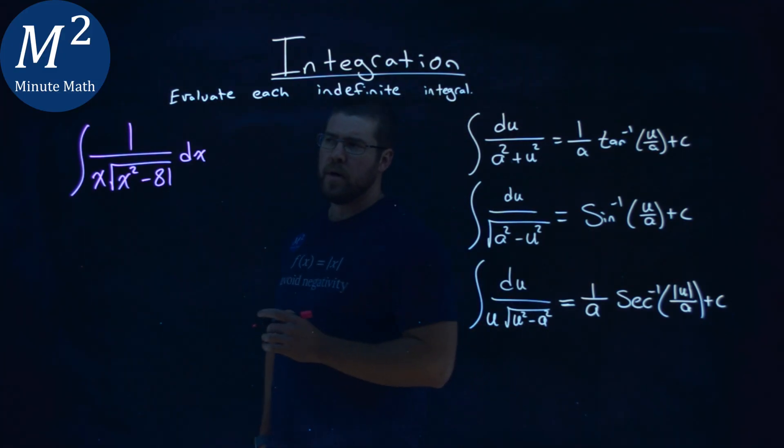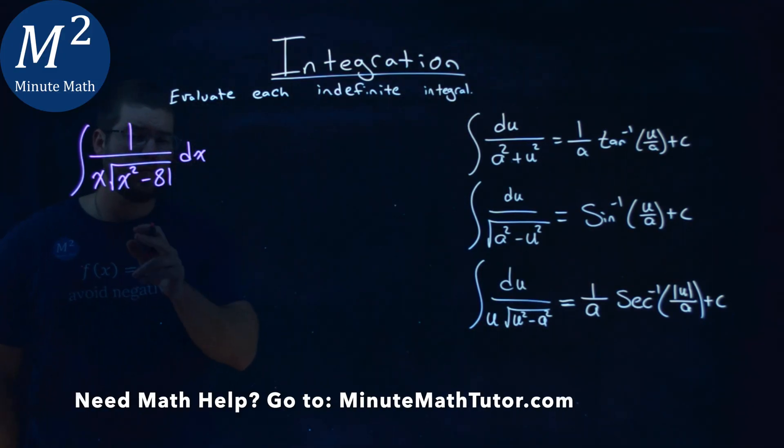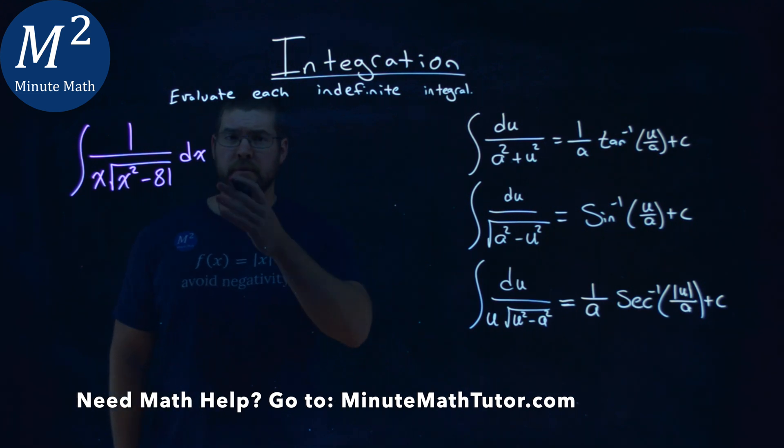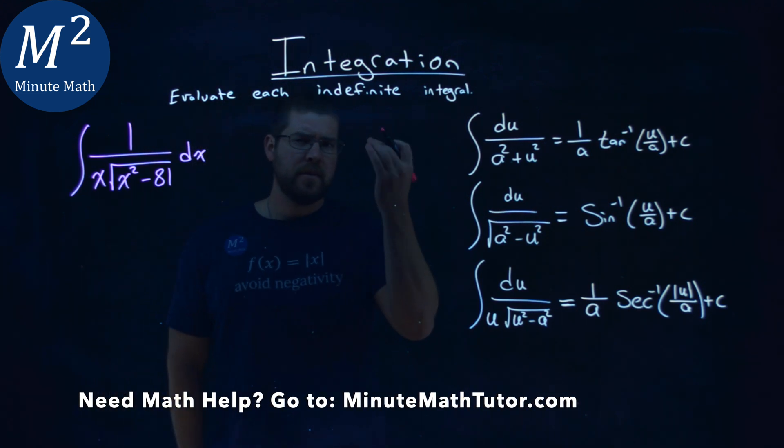We're given this problem right here, the integral of 1 over x times the square root of x squared minus 81 dx, and we have to evaluate this indefinite integral.